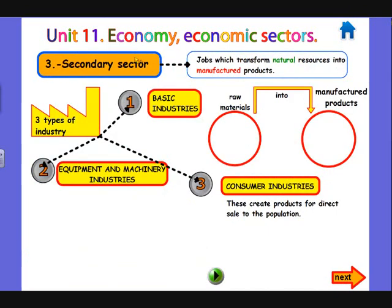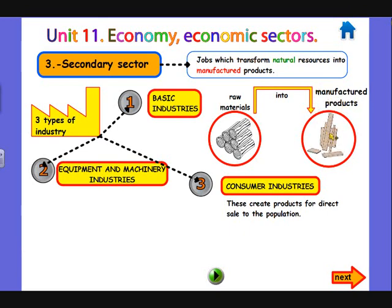Let's have a look now at the secondary sector, which includes jobs which transform natural resources into manufactured products. We can distinguish three types of industry: first, the basic industries; second, the equipment and machinery industries; and last, the consumer industries. The basic industries take raw materials such as tree trunks and transform them into manufactured products such as planks to build houses, bridges, and so on.